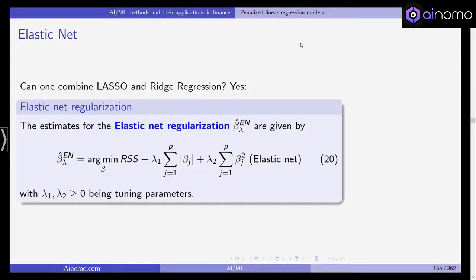Hello everyone, welcome back to our class in artificial intelligence and machine learning in finance. After having seen the Lasso and the Ridge regression, one can ask oneself whether one can combine the Lasso and the Ridge regression — the two most well-known types of penalized linear regression models — and actually yes, you can combine them to overcome the shortcomings of both.